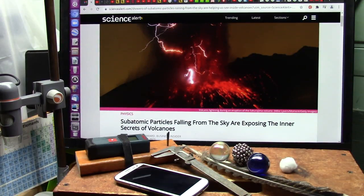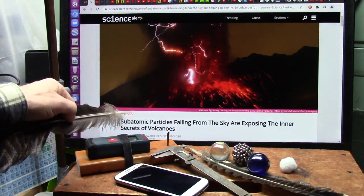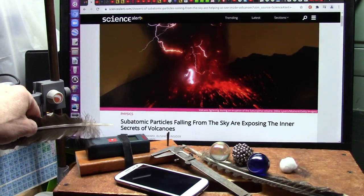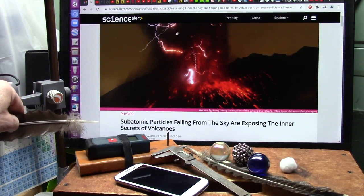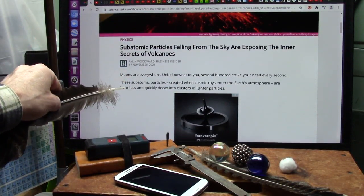Okay, my outstanding friends, here's Roger once again, and we're going to be talking about subatomic particles falling from the sky are exposing the inner secrets of volcanoes. Now, this just came out, and they're talking about muons. This is what they're looking for, is muons.